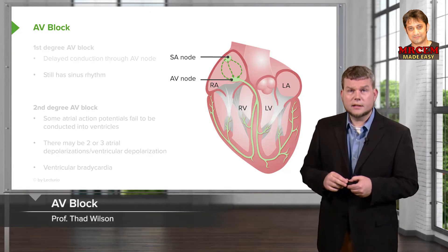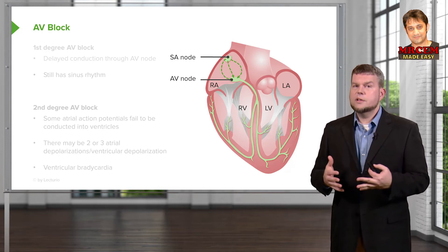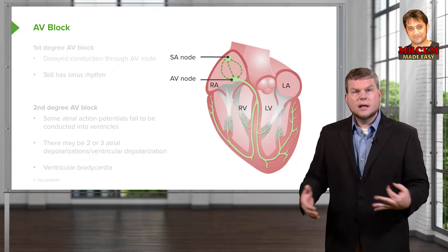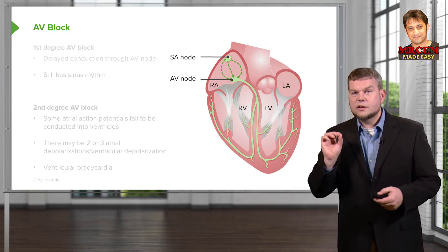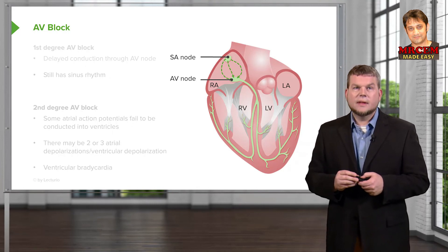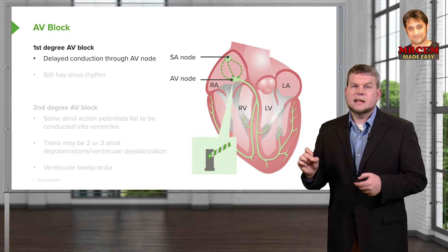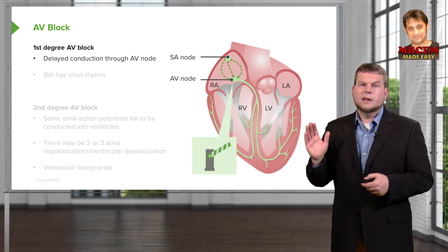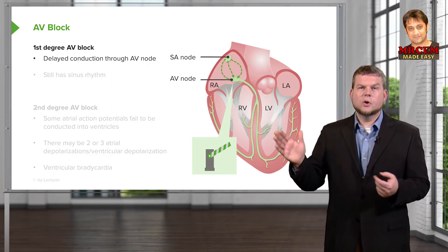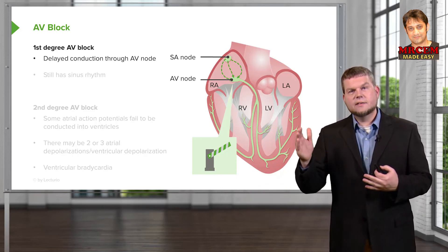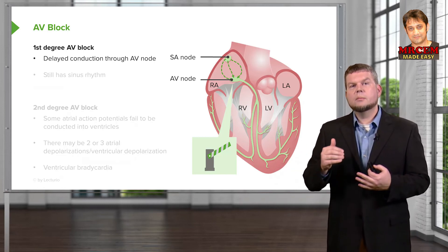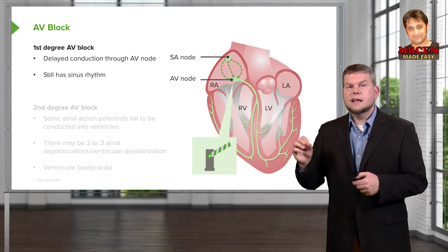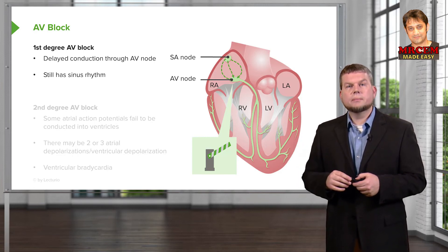Let's walk through a couple of the AV blocks. An AV block doesn't always mean conduction doesn't travel through at all — it can mean it is slowed down or delayed, and it doesn't fully block until you get to a type 3 block. A type 1 block delays conduction through the AV node. Think of it like a toll gate on a highway that slows everybody down but doesn't stop traffic. Interestingly, in type 1 AV blocks the rate is lower but you still have a normal sinus rhythm.